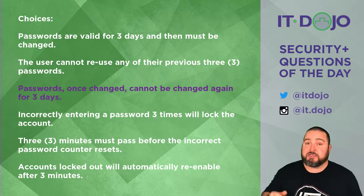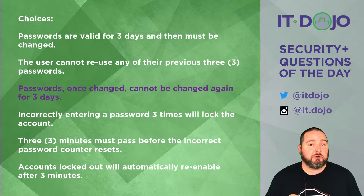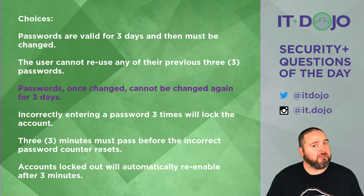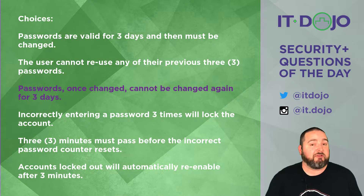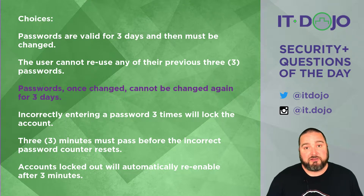Choice number three is the right choice, saying that once a password is changed, it cannot be changed again for three days. When you set the minimum password age, what you are doing more often than not is keeping users from just changing their password over and over and over, once right after the other, to get back to their preferred password. Users are amazing at how sneaky they can be sometimes, and so we have to protect them from themselves. A minimum password age setting keeps that user from changing their password six times in a five-minute window to get themselves back to the same password they were just using. That's one of the more common reasons that people would implement this.